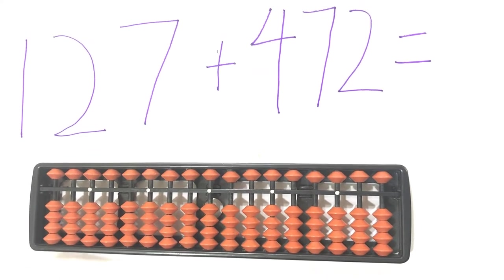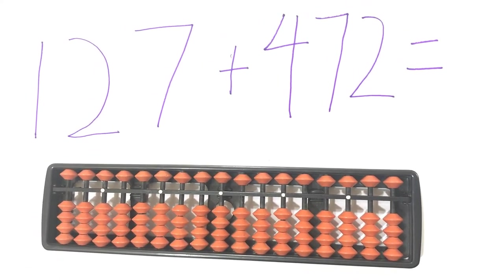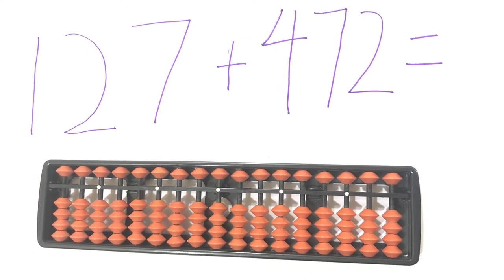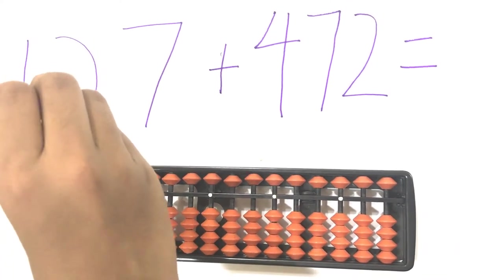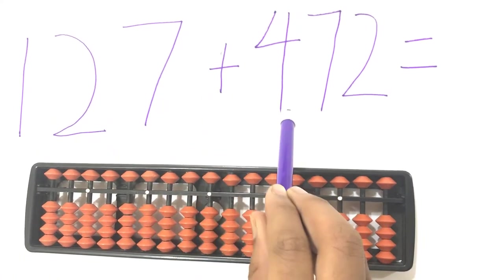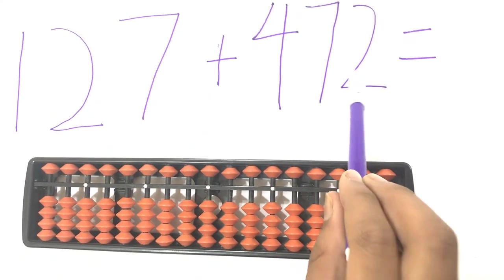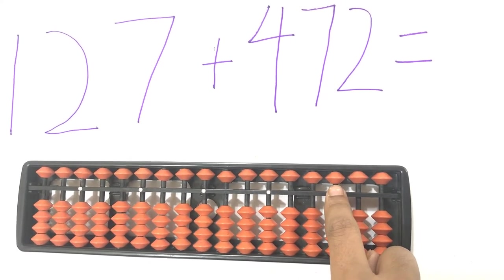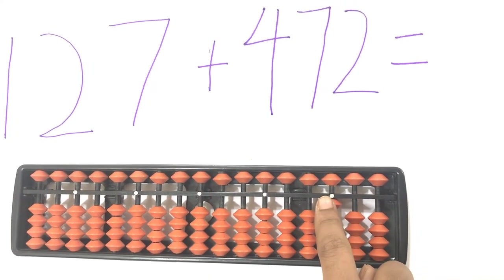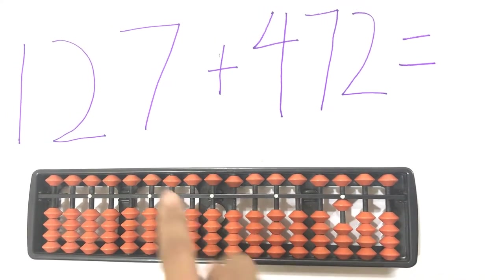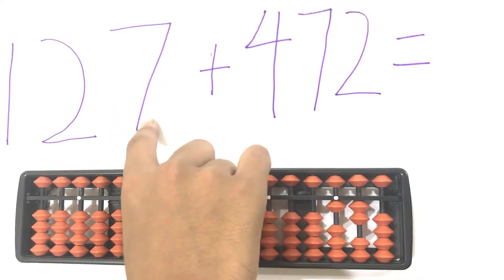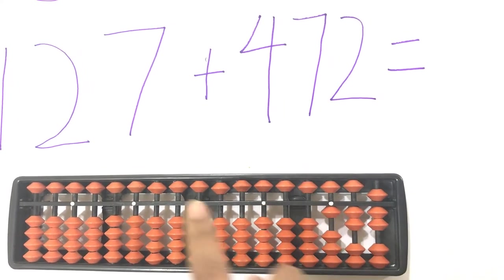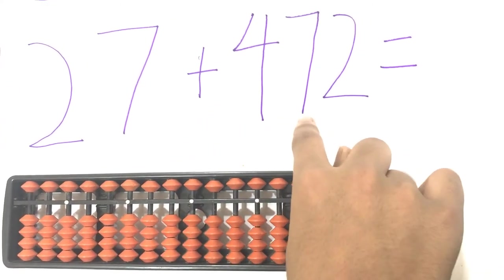Now you are going to learn three-digit plus three-digit addition in abacus. For this example I have taken the numbers one hundred twenty-seven plus four hundred seventy-two. One hundred twenty-seven. You have to start in the hundreds place. One. One in the hundreds place. Two. Two in the tens place. Seven. Five, six, seven in the ones place.